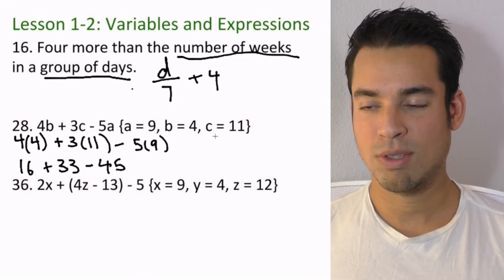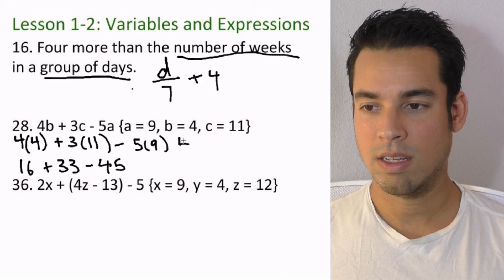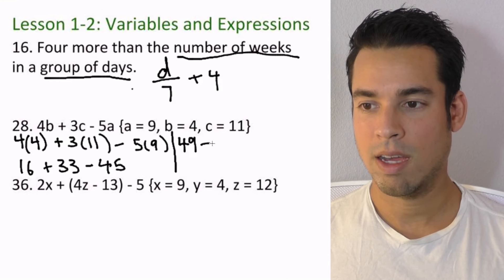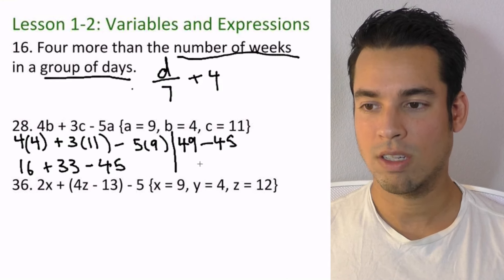So 16 plus 33, we just go left to right, order of operations. 16 plus 33 is—do a little line here—49 minus 45, which gives us four.